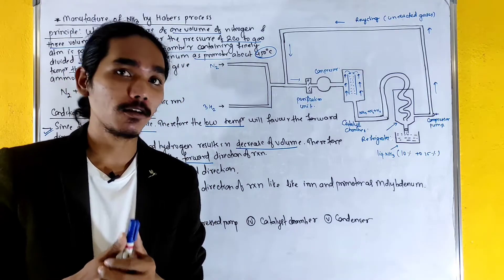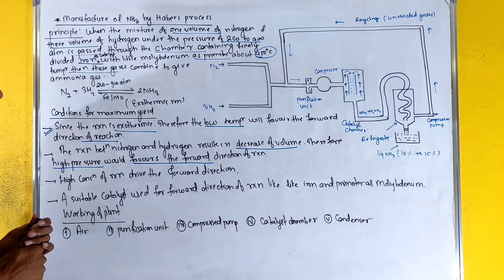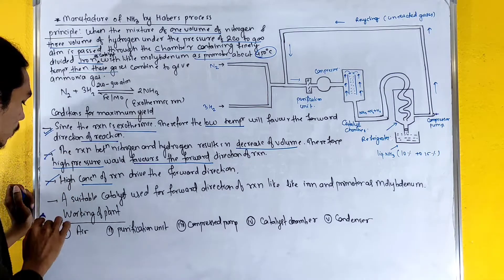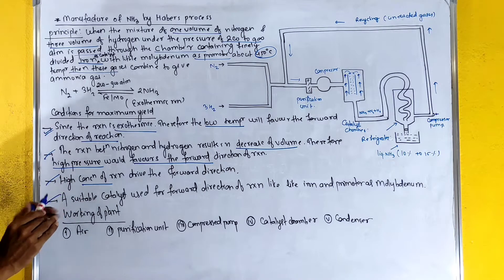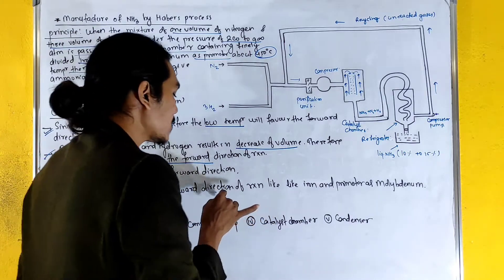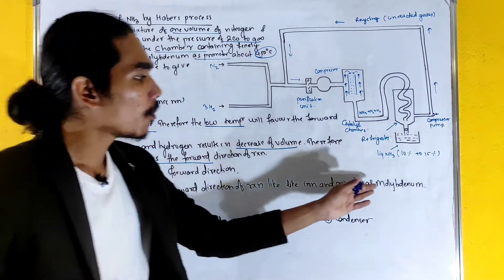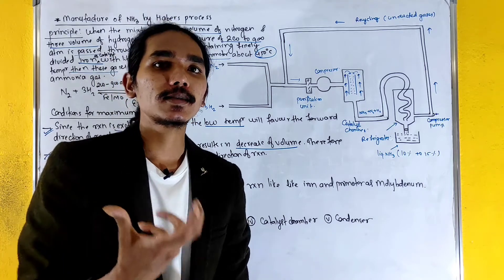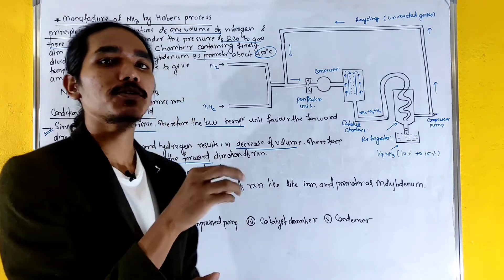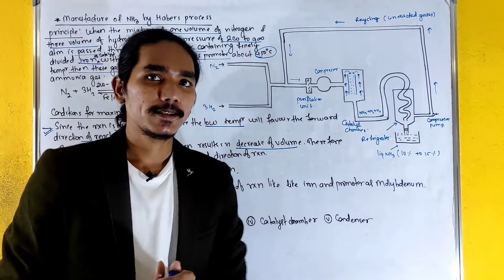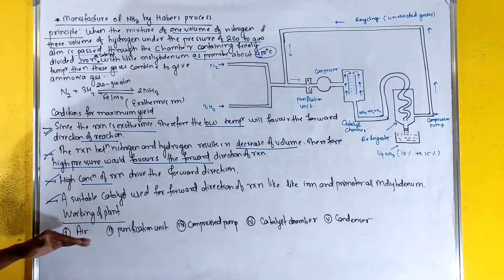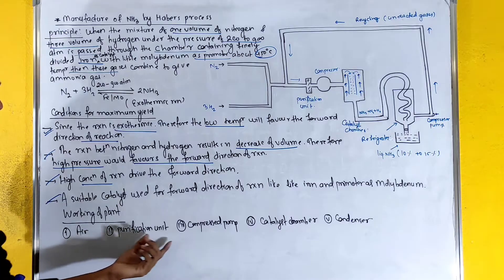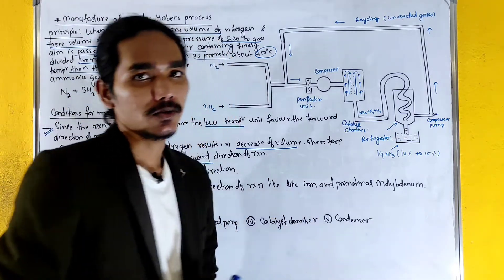By Le Chatelier's principle of chemical equilibrium, high concentration of reactants drives the forward reaction. Suitable catalysts used are iron, with molybdenum as a promoter. The process steps include: first, purification; second, compression; then the catalyst chamber; and finally, the condenser chamber.